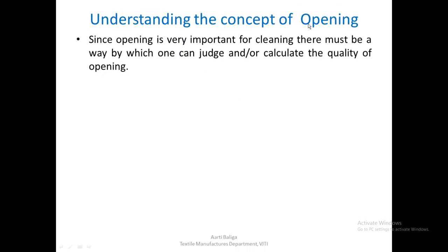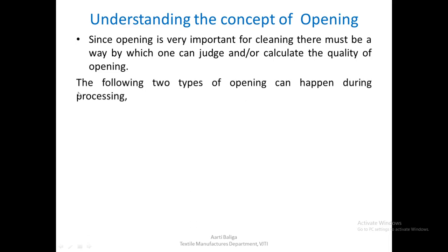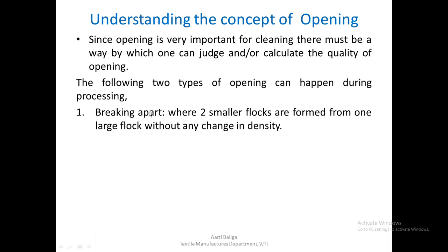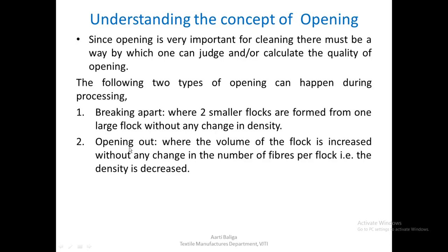Since opening is very important for cleaning, there must be a way to judge or calculate the quality of opening. Two types of opening can happen during processing. The first is breaking apart, where two smaller flocks are formed from one large flock without any change in density — a bigger flock is divided into smaller flocks without any change in volume or density. The second type is opening out, where the volume of the flock is increased — the same weight of fibers occupies a greater volume, meaning density is reduced.